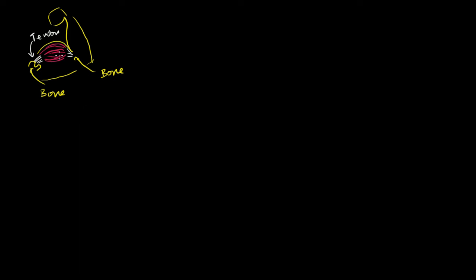We have the general sense: connected to two bones, and when it contracts, it moves some part of our skeletal system. So we're actually focused on skeletal muscles. The other types are smooth muscles and cardiac muscles. Cardiac muscles are those in our heart, and smooth muscles are more involuntary, slow-moving muscles in things like our digestive tract.